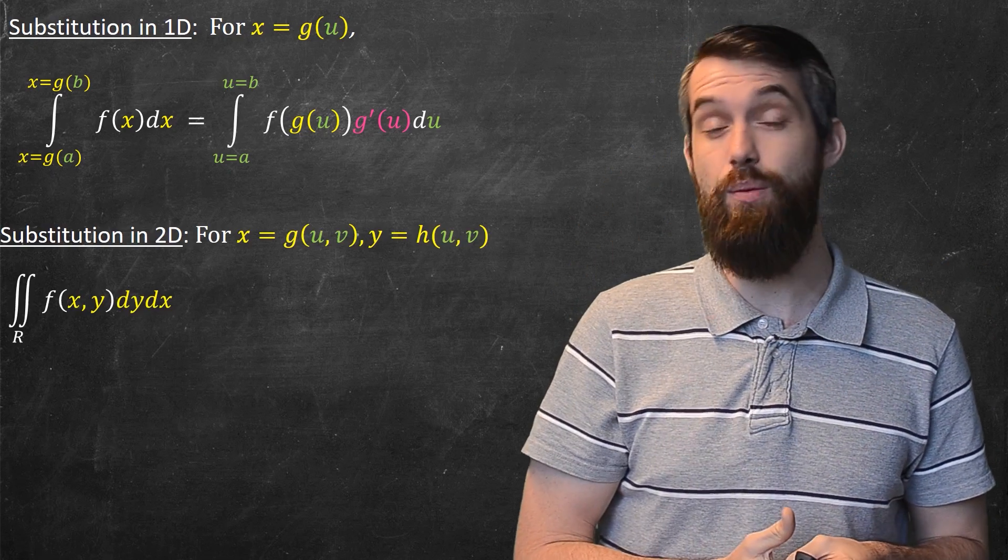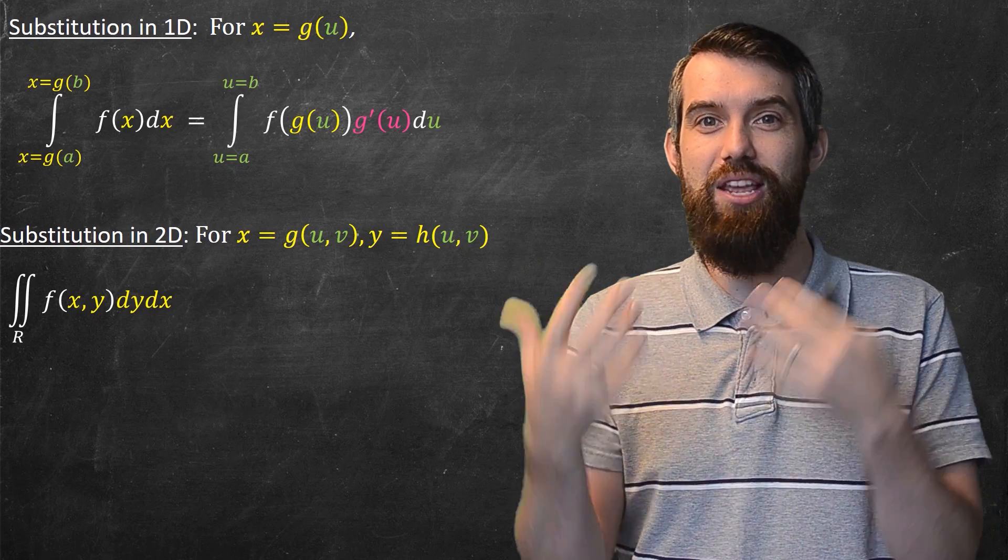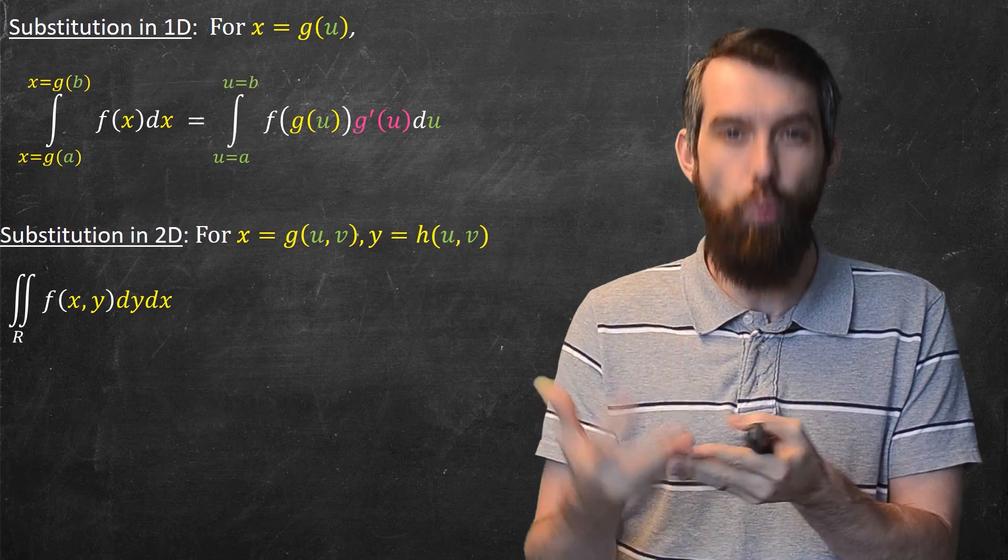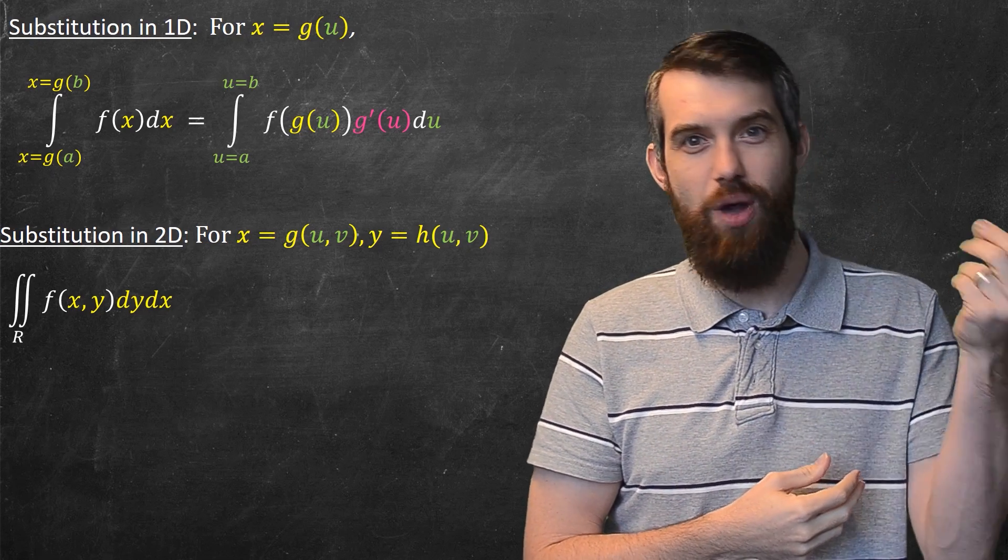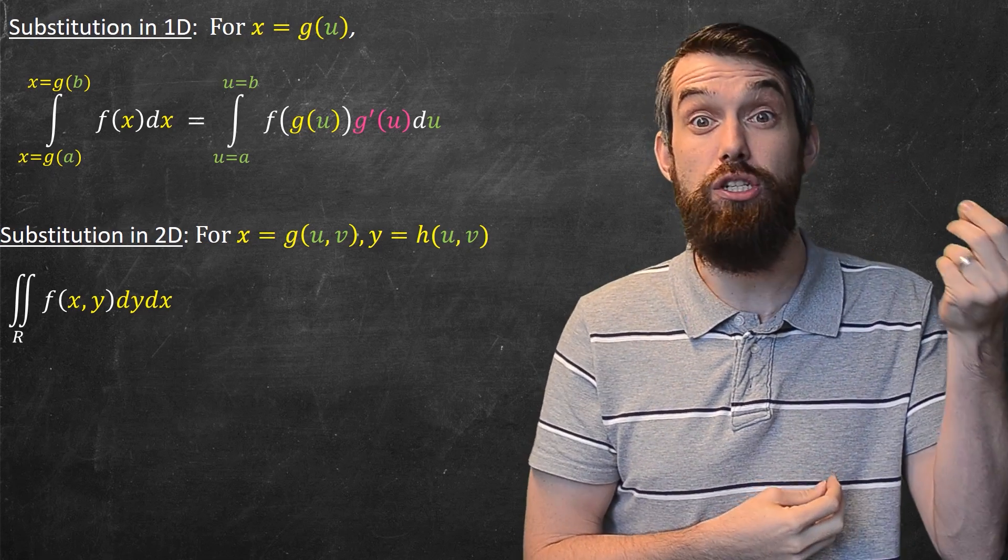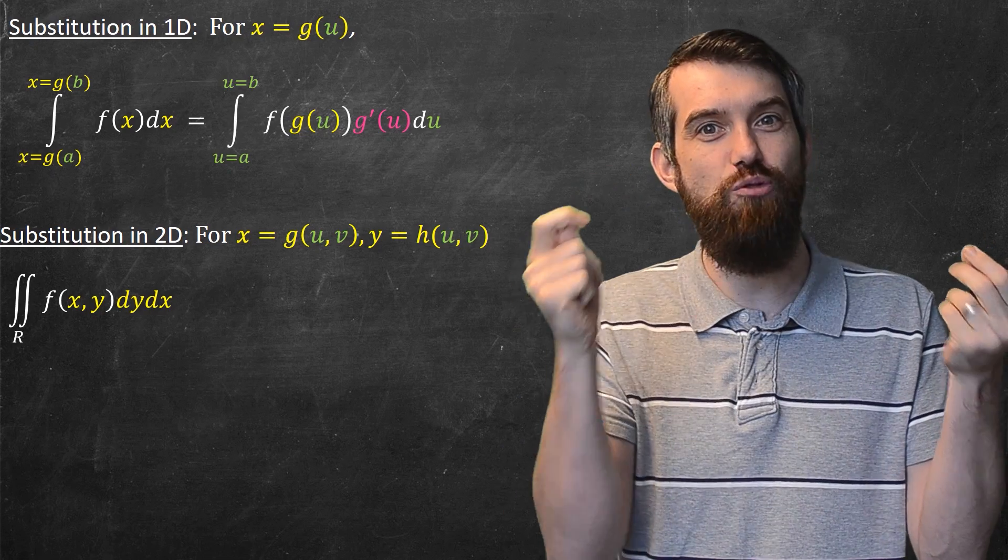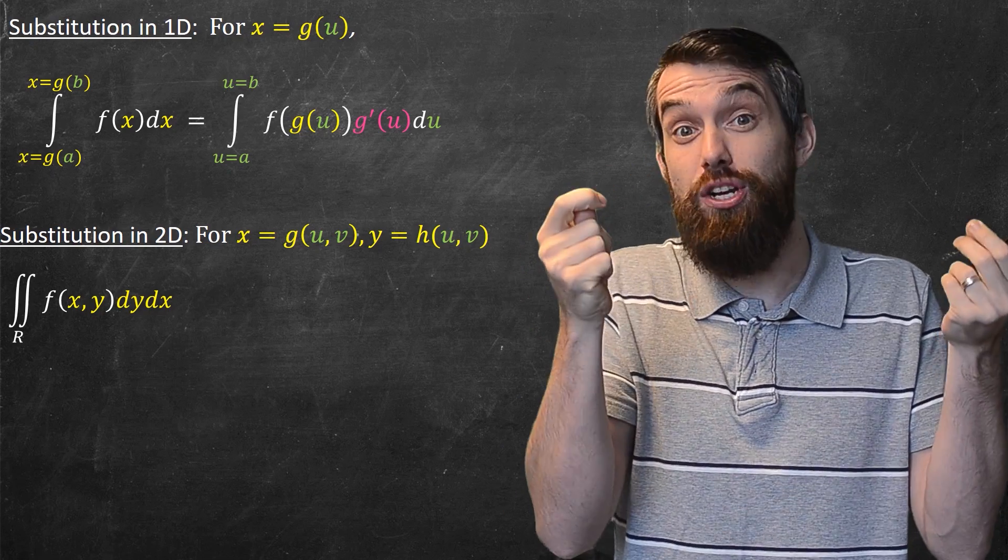Nevertheless, let's go and look at what it's going to be in multivariable calculus. Well, you begin much the same way. You have an integral in terms of x and y and it's integrated over some particular region. And then you say I'm going to take the x and write that in terms of u and v, some function g of u and v, and I'm going to take the y and write that in terms of uv, some function h of u and v.